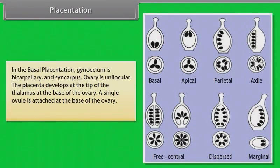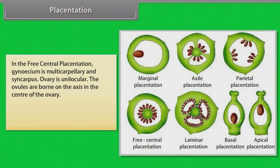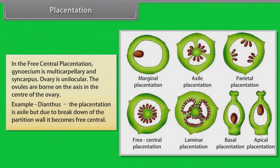In basal placentation, gynoecium is bicarpellary and syncarpous, ovary is unilocular. The placenta develops at the tip of the thalamus at the base of the ovary, and a single ovule is attached at the base. Example: Tagetes. In free central placentation, gynoecium is multicarpellary and syncarpous, ovary is unilocular. Ovules are born on the axis in the center of the ovary. Example: Dianthus. The placentation is axile but becomes free central due to breakdown of the partition wall.